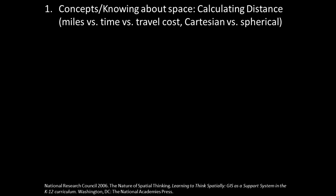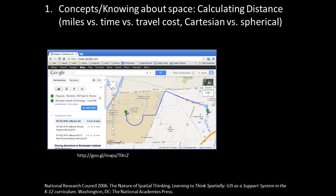The concepts of space, or knowing about space, is the idea of understanding space and spatial relationships from different perspectives. For example, when you go traveling, you might consider your road trip based on the miles you have to travel, as shown in the Google Maps image on the left, the time it takes to arrive at your destination, or perhaps how much money you have to spend on gasoline, airline tickets, or some other cost.